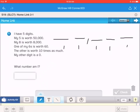So it says my five is worth 50,000. For that to happen, it needs to be in the 10,000s place. My eight, next one, my eight is worth 8,000. So that would be in the thousands place. The six, it says one of my six is worth 60. So I'm going to put that right in the tens place, because that's where 60 would be.